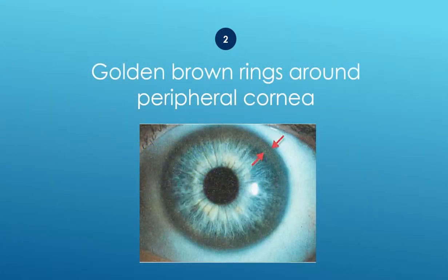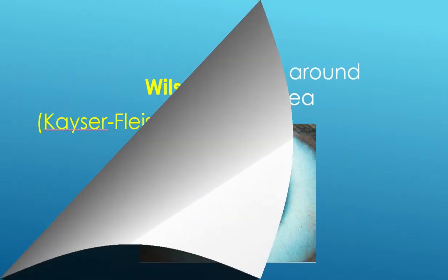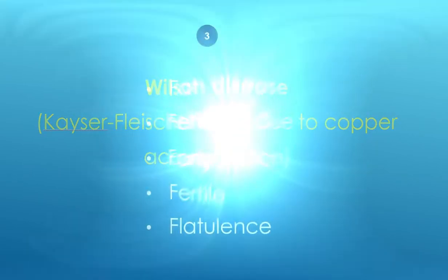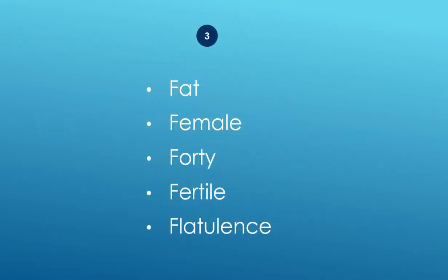Golden brown rings around the peripheral cornea — Wilson disease. Kaiser-Fleischer rings due to copper accumulation.